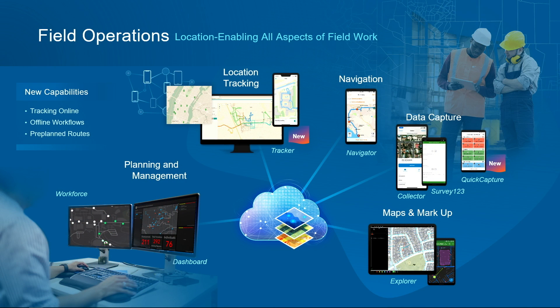Field operations allow organizations to take maps into the field as well as coordinate operations. Recent advances include the availability of location tracking in ArcGIS Online, the ability to take pre-planned optimized routes into Navigator for use offline, and the ability to efficiently take data offline in Explorer. We also saw the introduction of Quick Capture as an easy and efficient way for observers to rapidly capture observations, as well as to easily capture linear features — for example, using the phone as a sensor when biking. It's been very popular.